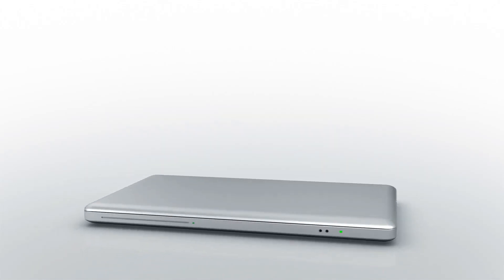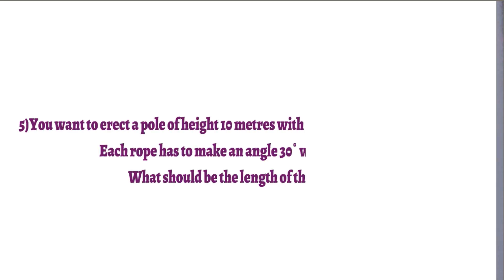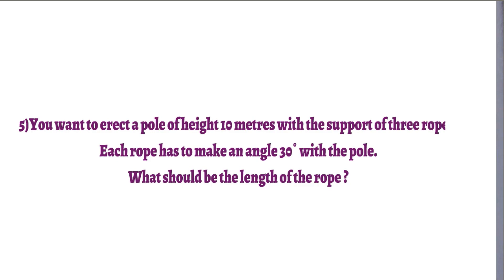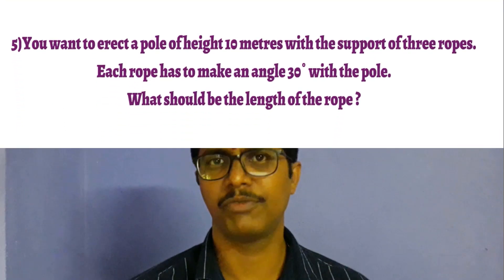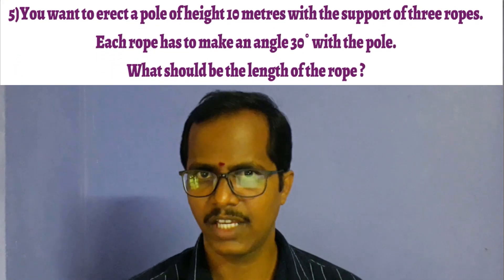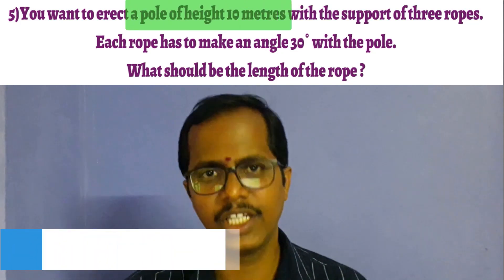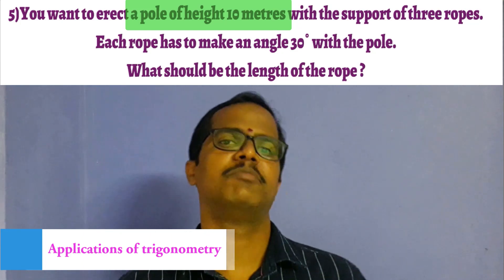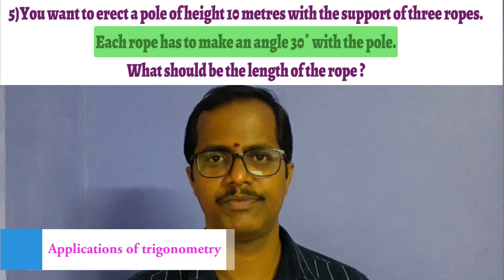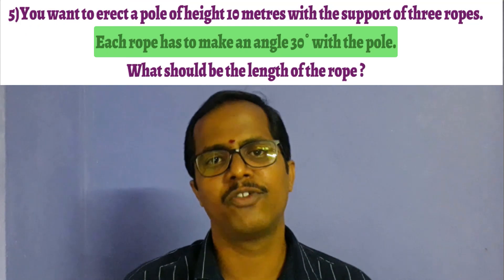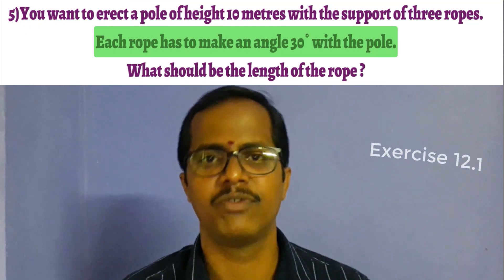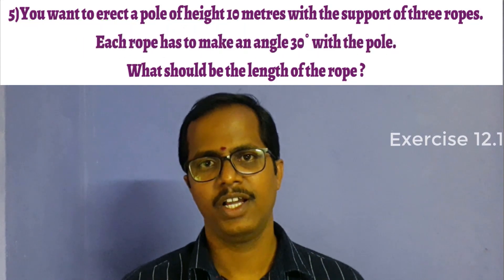Hello friends, welcome to our channel. This is Bhaskar Bhura. You want to erect a pole of height 10 meters with the support of three ropes. Each rope has to make an angle of 30 degrees with the pole. What should be the length of the rope? Let us see how to find this.